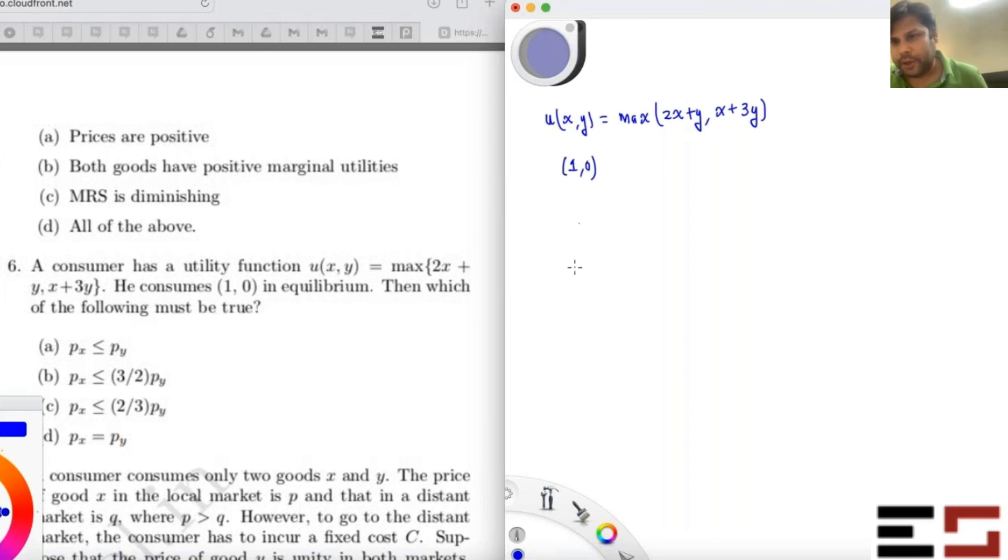Let's first figure out the satisfaction level of the consumer at (1,0). Can you tell me what is the satisfaction level of the consumer at (1,0)? One... uh, so one, two... yeah, it's two, right? So utility is two right at (1,0).